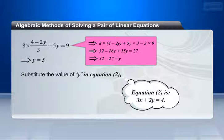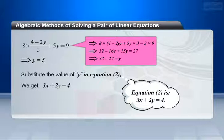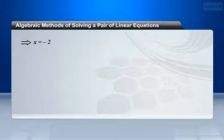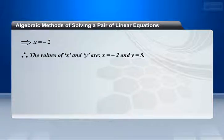Substituting y equals 5 in equation 2, that is, 3x plus 2y equals 4, we get: 3x plus 2 multiplied by 5 equals 4. This implies 3x plus 10 equals 4, so 3x equals minus 6, which implies x equals minus 2. The values of x and y are x equals minus 2 and y equals 5.